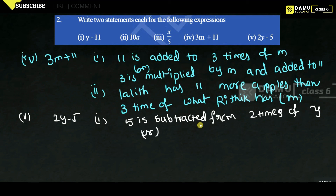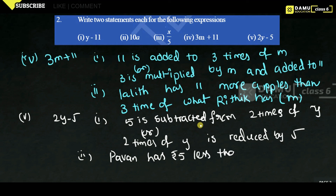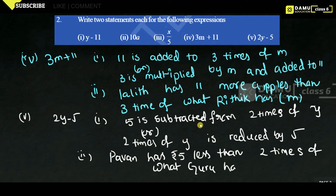A word-problem statement for 2y minus 5: 'Pavan has 5 rupees less than 2 times what Guru has.' Here, Guru has y rupees.